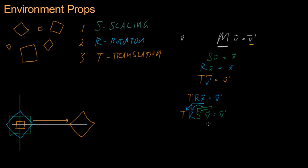The only thing left for us to do is observe that we have TRS times V equals V prime, and M times V also equals V prime. So M and TRS are the same matrix. All we have to do to get M is multiply T times R times S.